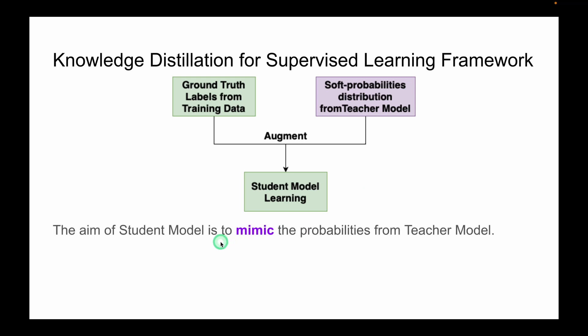The aim of this student model is to mimic the probabilities which is outputted by the teacher model. Hence with this entire process we aim to distill some of the teacher's so-called dark knowledge which is learned by teacher model.